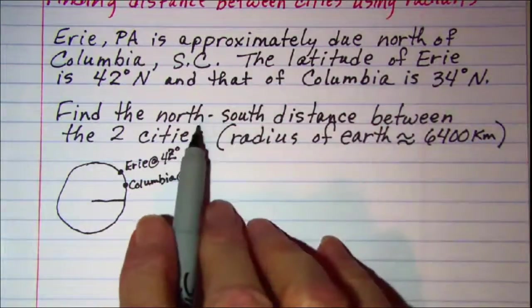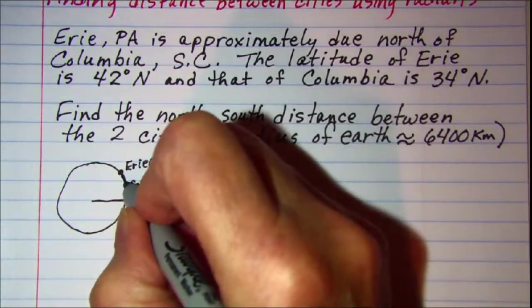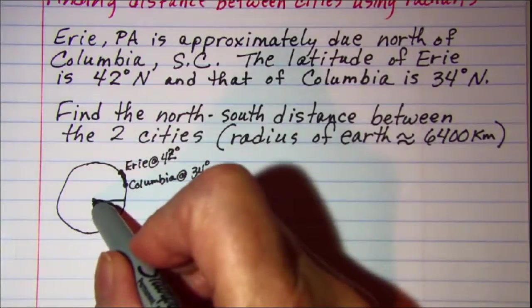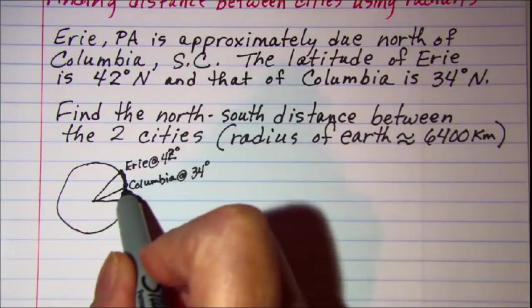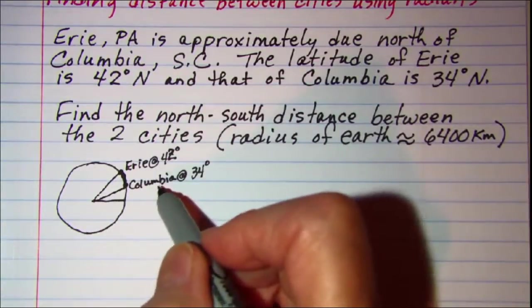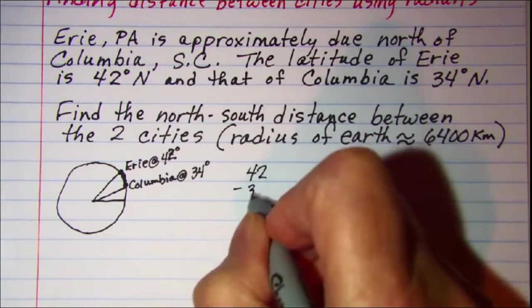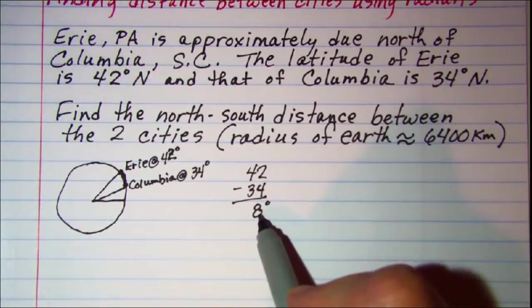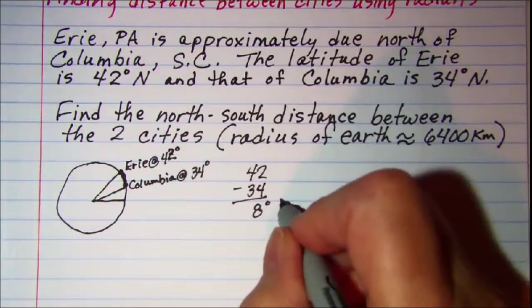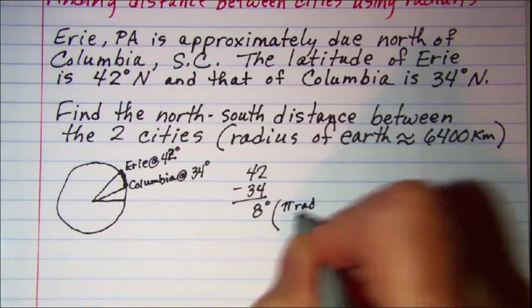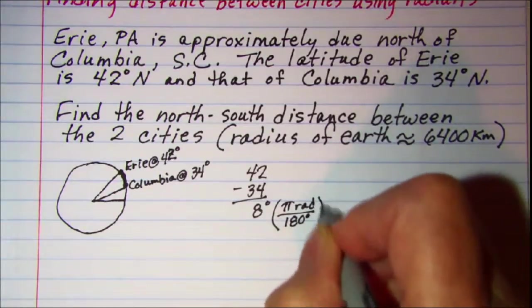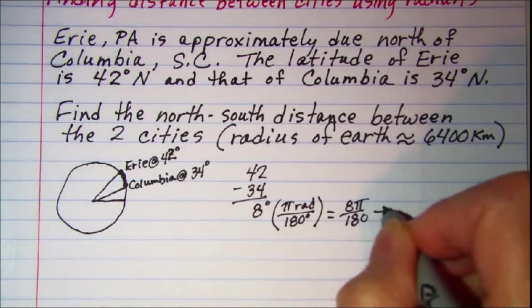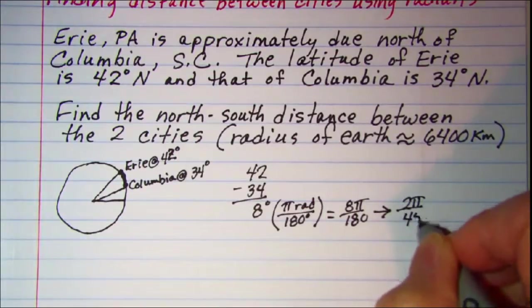Our question is to find the north-south distance between the two cities, so we're looking for this arc length right here. First, we determine the measure of the central angle between the two cities: 42 degrees minus 34 degrees gives us 8 degrees difference. Then we convert that 8 degrees to radian measure by multiplying by π radians over 180 degrees, which gives us 8π/180, or 2π/45 radians.